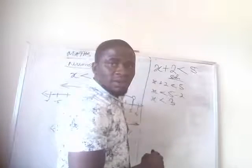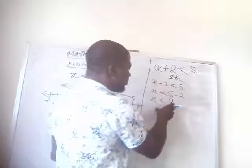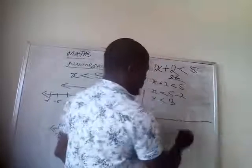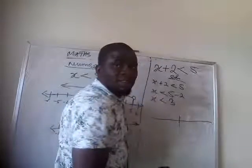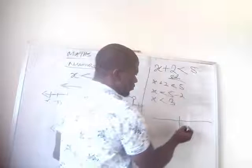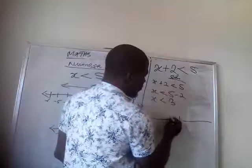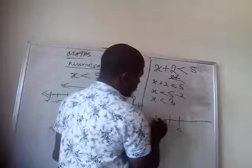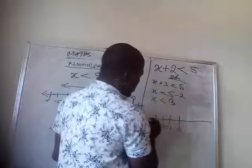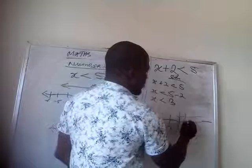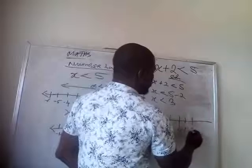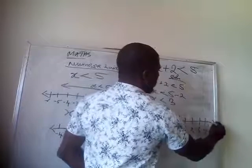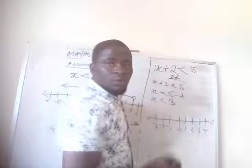We are done solving. So for you to represent it in number line, you draw a line. Remember, it's less than 3. 0, minus 1, minus 2, minus 3, and so on. You have 1, 2, 3, 4. It also continued.